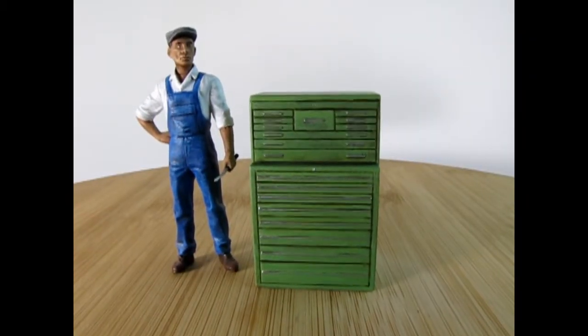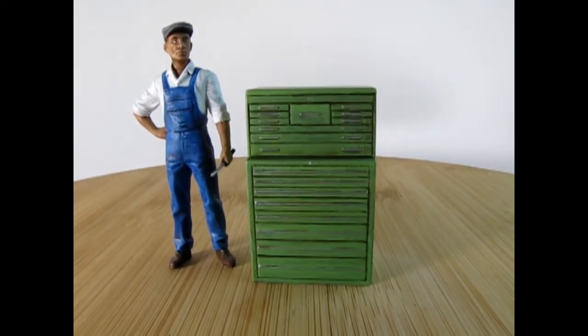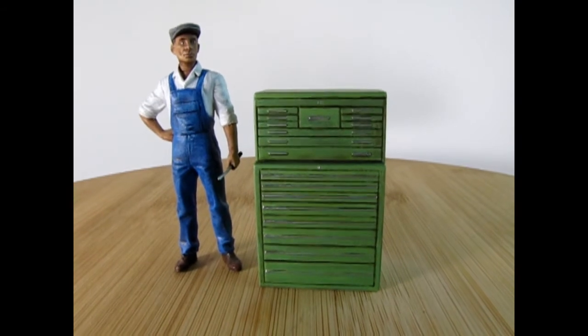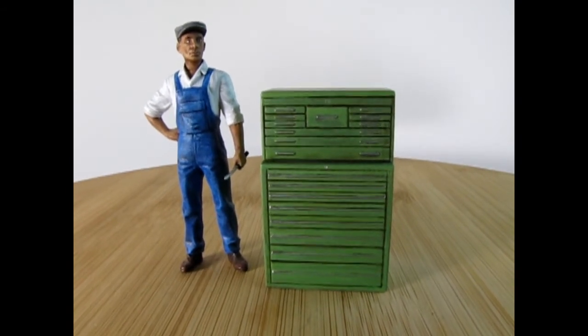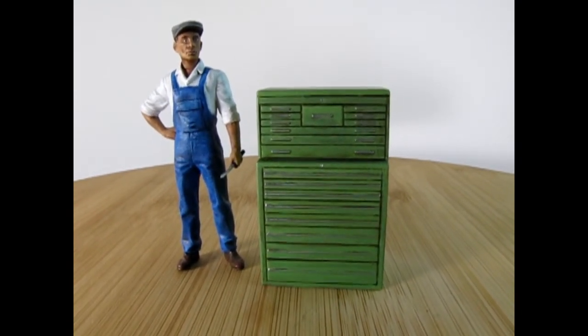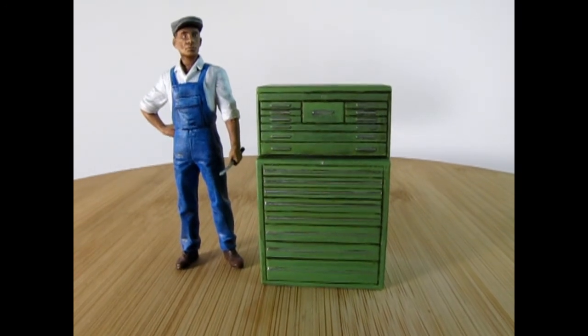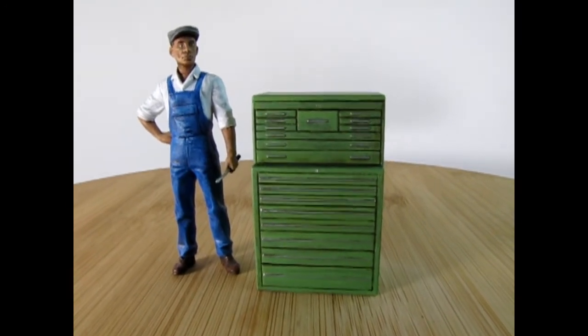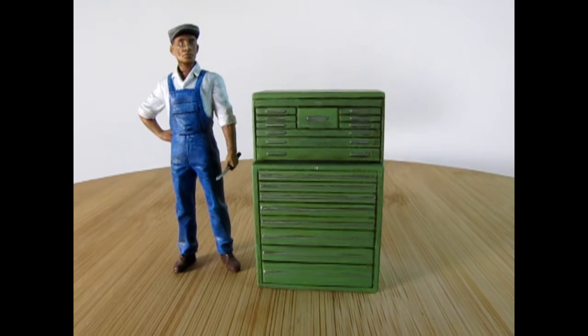Here we have our Monogram toolbox painted up in a 1930s apple green with our ICM mechanic. This mechanic came in the Henry Ford and Friends set. As you can see the cabinet is actually pretty tall. It would be the perfect size for a mechanic of this size.